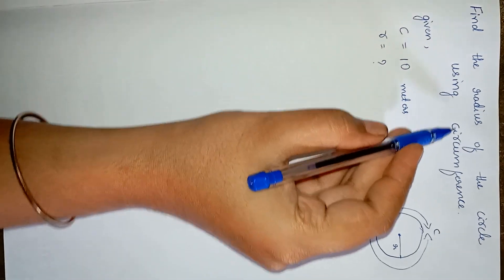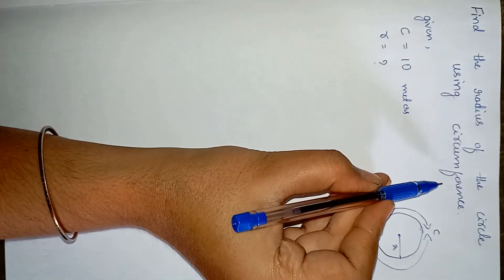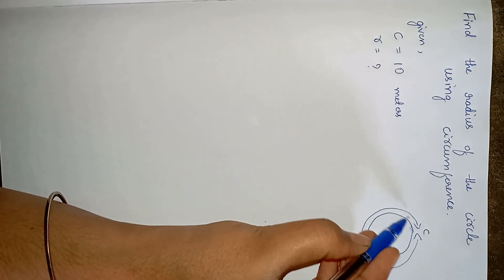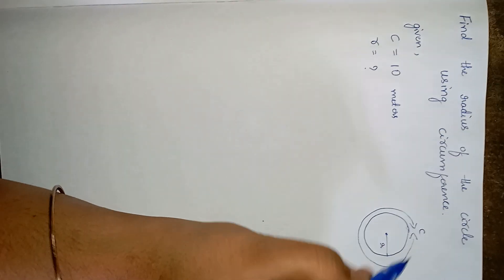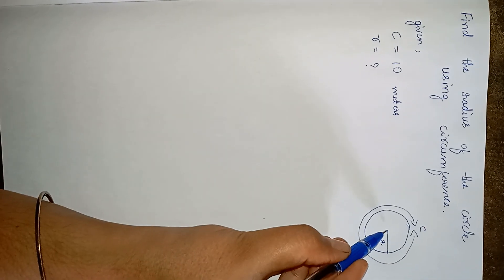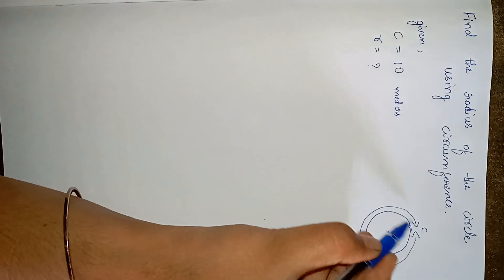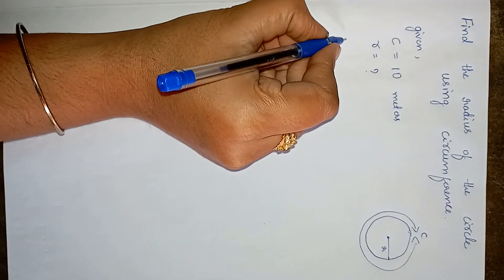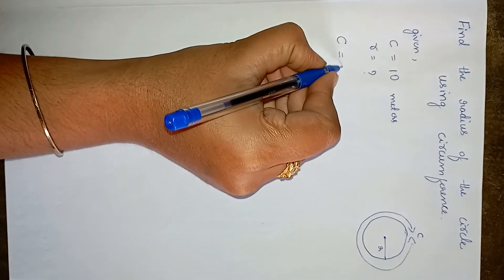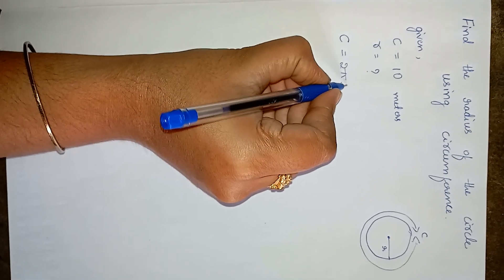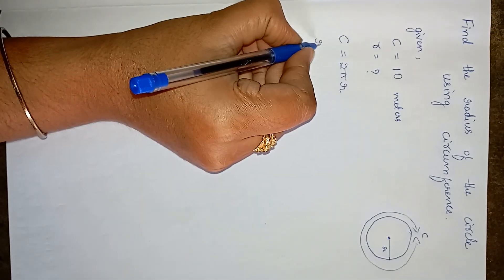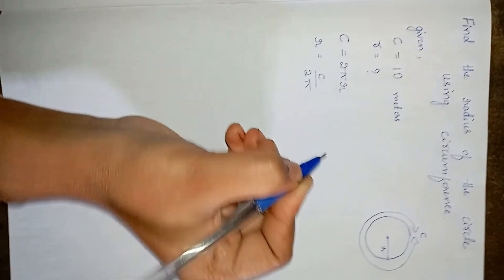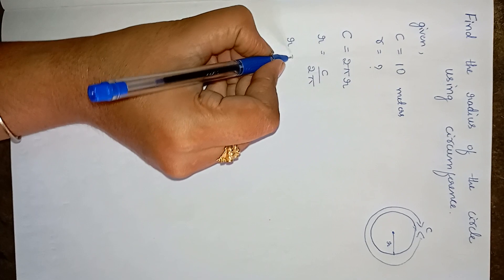Find the radius of a circle using its circumference. This whole boundary is the circumference, and we need to find the radius using it. We know the formula: circumference C is equal to 2πR. We need to find R, so rearranging gives R is equal to C divided by 2π.